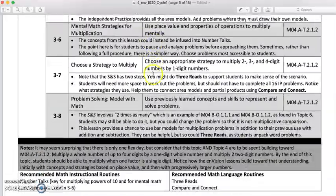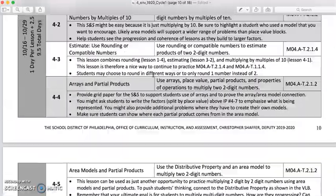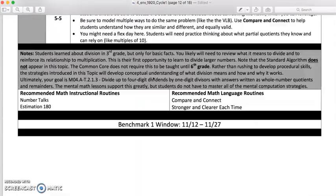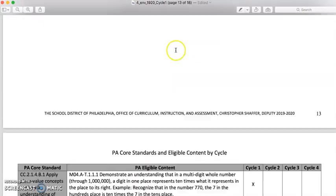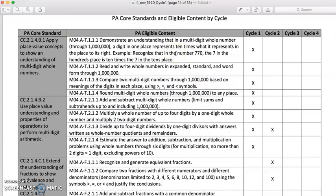And that's pretty much it. You'll see that repeated for every topic throughout the cycle. And then you'll get to the benchmark window and then a summary for the year. These are the PA core standards and eligible content and what cycle they appear in.